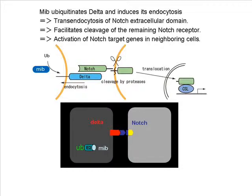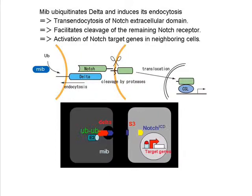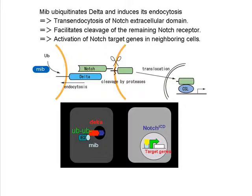Here is our proposed model for mindbomb function in Notch activation. First, Delta binds to Notch and mindbomb ubiquitinates Delta. Next, along with Delta endocytosis, the extracellular domain of Notch is transcytosed into the signal-sending cells. This facilitates cleavage of the Notch receptor in signal-receiving cells. Finally, the cleaved Notch intracellular domain goes into the nucleus to activate target genes.